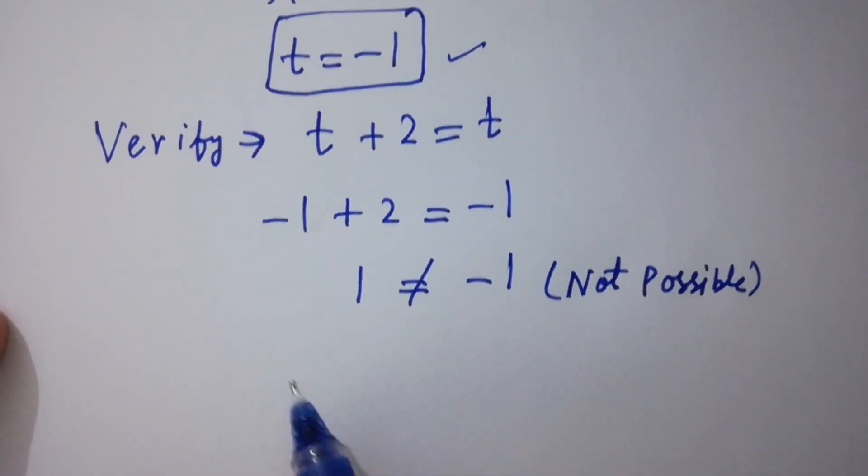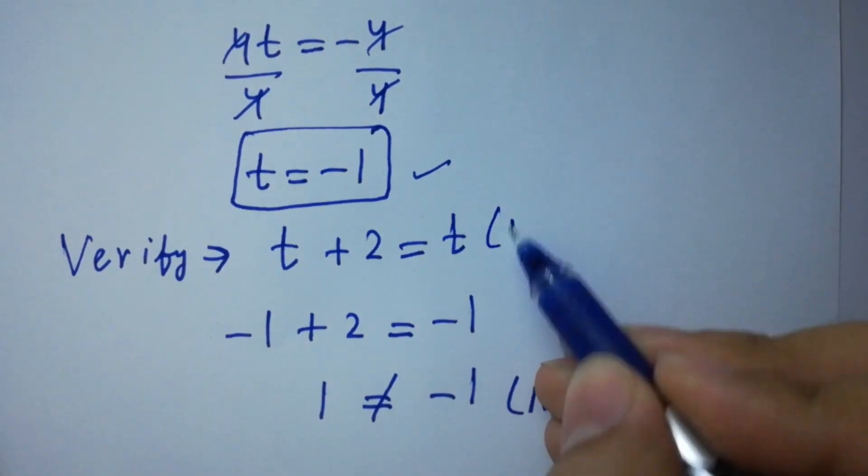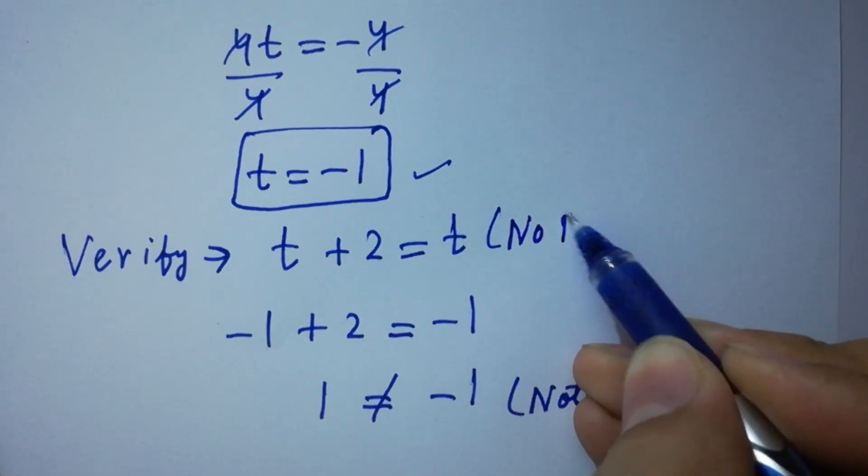So, finally, the problem of t plus 2 equal to t has no real solution.